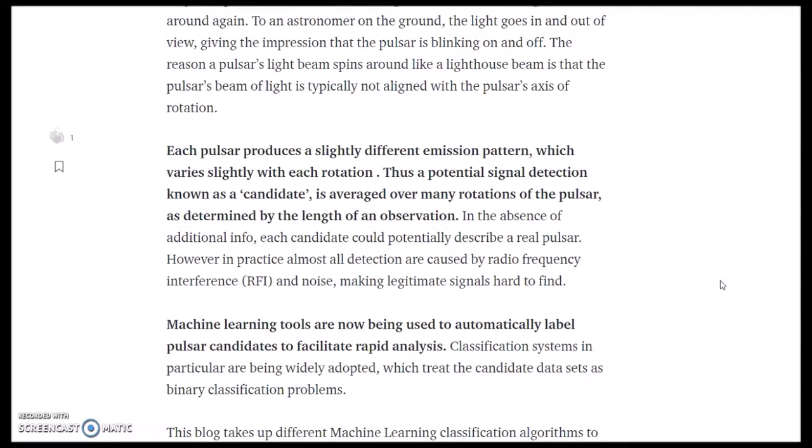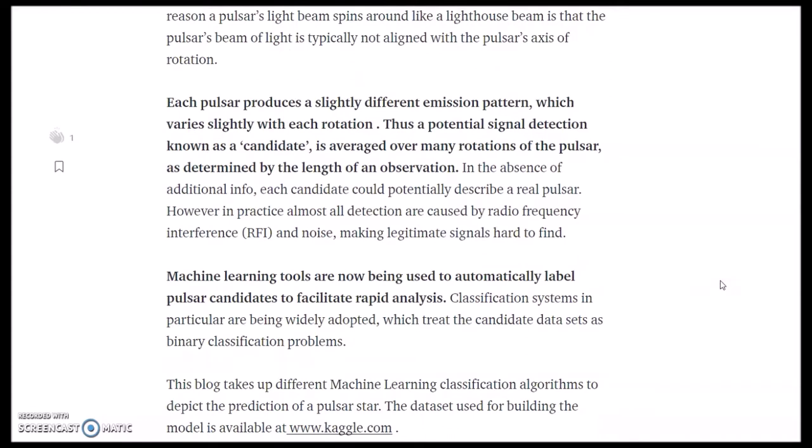In the absence of additional information, each candidate could potentially be described as a real pulsar. However, in practice, almost all detections are caused by radio frequency interference and noise, making legitimate signals hard to find. Thus, we use machine learning tools to detect and label pulsar candidates to facilitate rapid analysis.